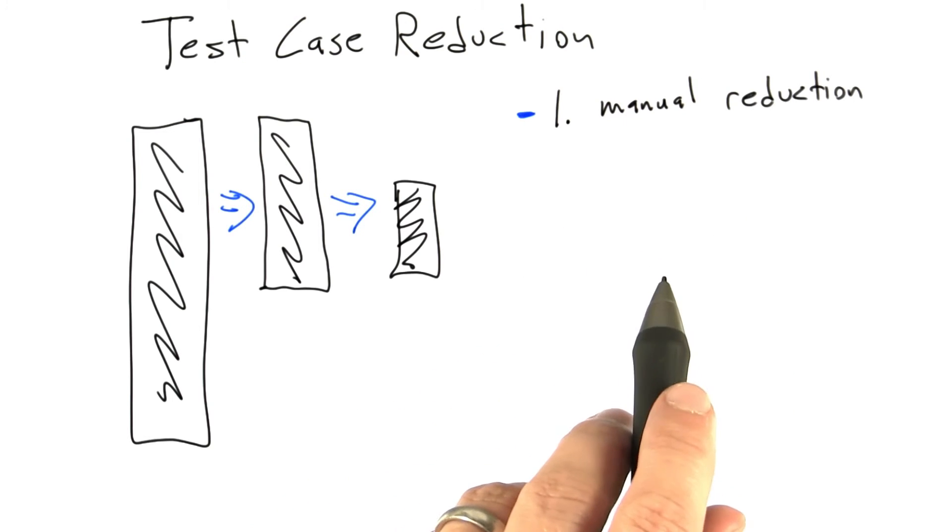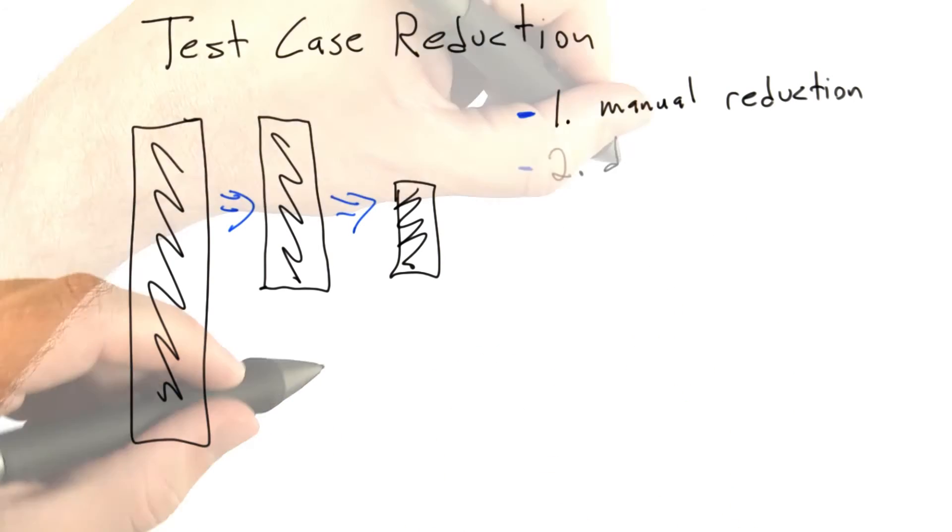So option one, manual reduction. This has been done by people debugging for probably about as long as computer science has been around.